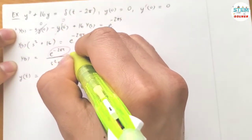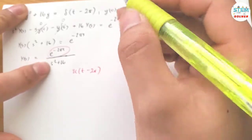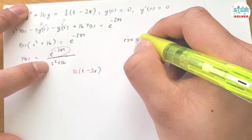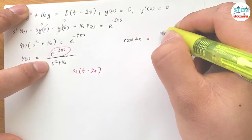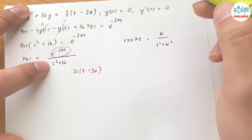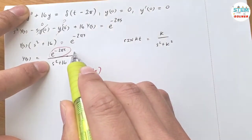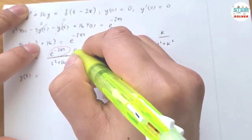For this one, s squared plus 16 is similar to sine, right? If you have sine kt, that will give you k over s squared plus k squared, so this is going to be 4 squared, and you don't have the 4 on top, so in order to make 4, I just put the 4 in.